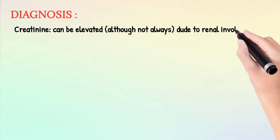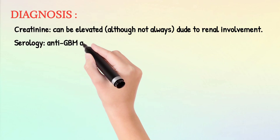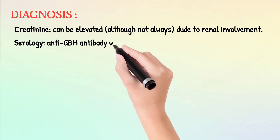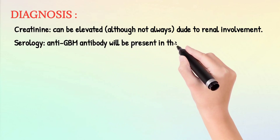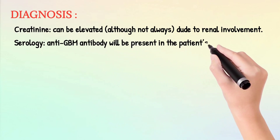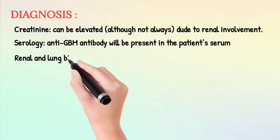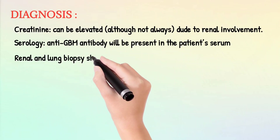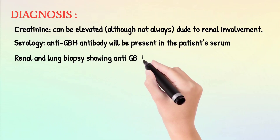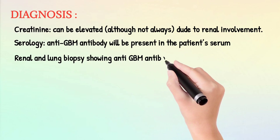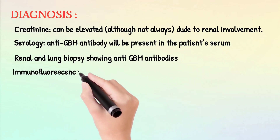Serology shows that anti-GBM antibodies will be present in the patient's serum. Renal and lung biopsy showing anti-GBM antibodies by immunofluorescence will show linear GBM fluorescence for IgG and C3 complement.